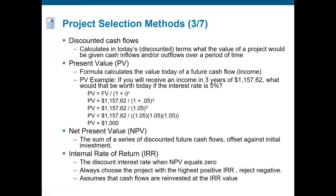Net present value is the sum of a series of discounted future cash flows offset against the initial investment. Continuing the example: if the discounted future cash flows total $1,000 and the initial investment was $500, we subtract that from the present value — $1,000 minus $500 gives a net present value of $500.